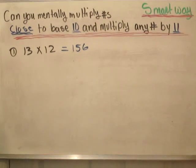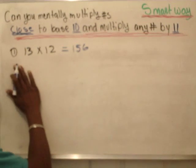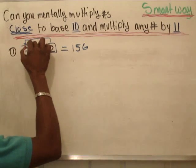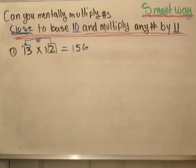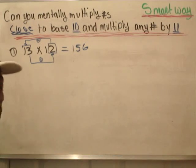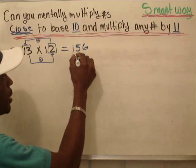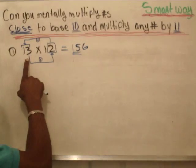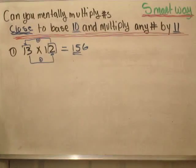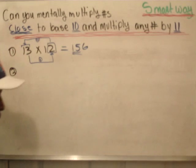And how do we do this type of problem? First, we're going to add. We add onto 13, then we're going to multiply the last two numbers. You can mentally do this by just looking and saying: I have 2, I add 2 onto 13, it gives me 15. And when I multiply those two numbers, it gives me 6. And there's your answer. We're going to do another one and see how you're picking up on the smart way of multiplying two numbers that are close to base 10.